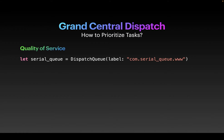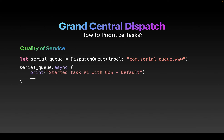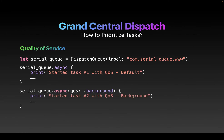There are five predefined QoS levels in the standard library, from highest to lowest priority: userInteractive, userInitiated, default (used when you just call .async or .sync), utility (lower priority), and background (lowest priority). To use QoS, when calling .async on a queue, you add the qos argument — for example .background, .userInteractive, .userInitiated, .default, or .utility — to specify task priority.